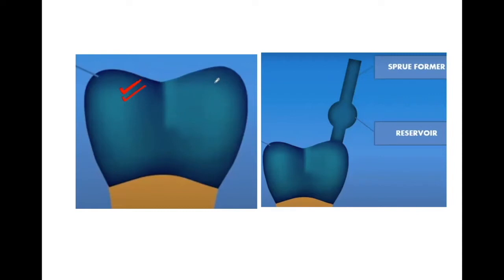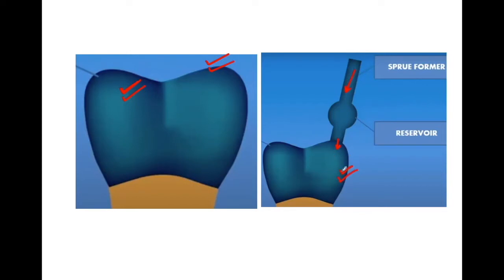This wax pattern is ready with us; this form we want as our final restoration. The next step is the sprueing of the wax pattern. This is the sprue former — it's a hollow channel which is attached to the wax pattern. Basically, it provides a channel so that molten metal can flow into this area, which will be hollowed after we remove this wax pattern by keeping it in the oven. We make the wax pattern and then attach the sprue former, which is a channel for the molten metal.